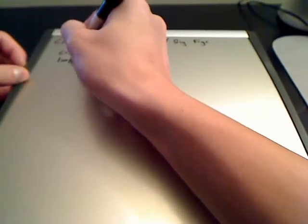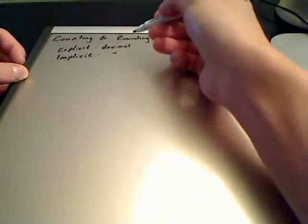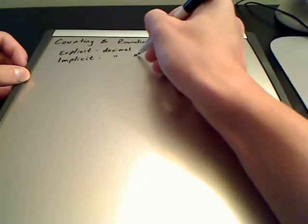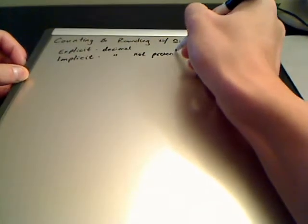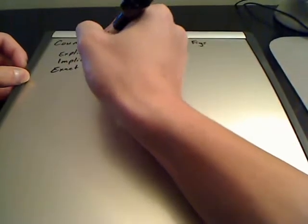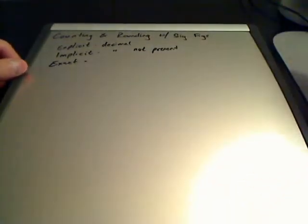You're going to have implicit — whereby decimal, those are ditto marks meaning same as above — decimal not present. And then you're going to have exact, which are essentially, for our purposes, going to be counting numbers or actual counts, or most frequently, conversion factors. So those are the three different types of numbers.